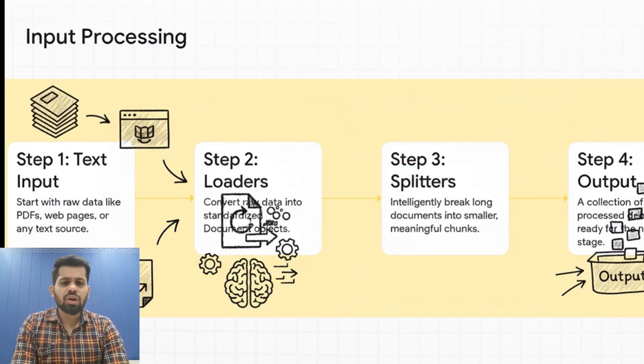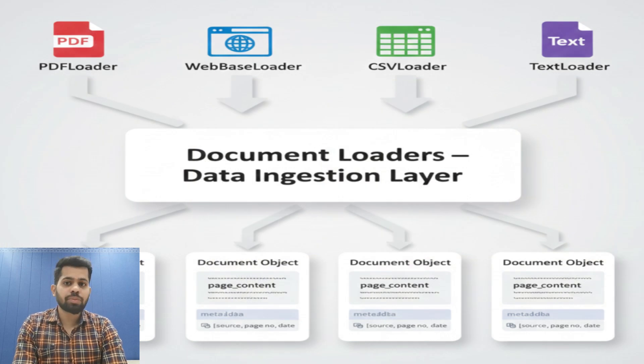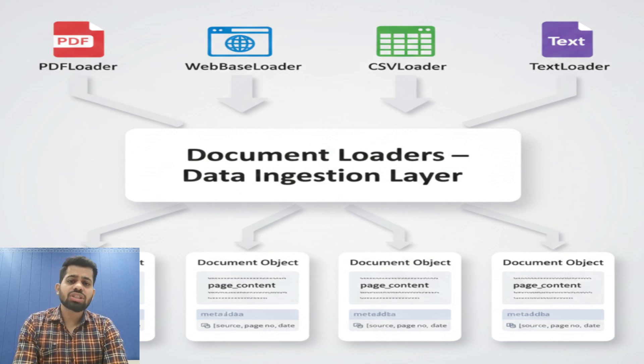Document loaders are the data ingestion layer. Think of them as specialized importers for different file types. LangChain has different types of loaders based on your input format like PDF loader, web-based loader, CSV or text loader. Each loader does something crucial: it converts your raw data into document objects which are small enough to be understood and processed accurately in subsequent steps.